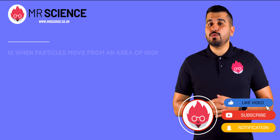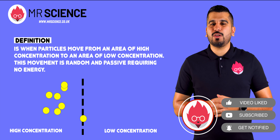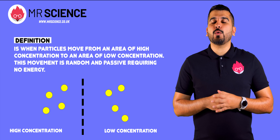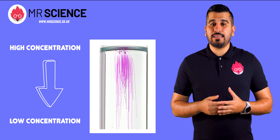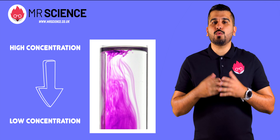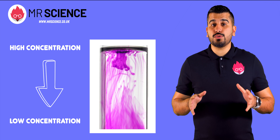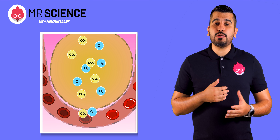Diffusion is when particles move from an area of high concentration to an area of low concentration. This movement is random and passive, requiring no energy. If I took some potassium permanganate crystals and placed them in water, over time the entire water would turn purple as the potassium permanganate diffuses through the water. Another example of diffusion can be seen when oxygen and carbon dioxide move into and out of the blood in our alveoli.